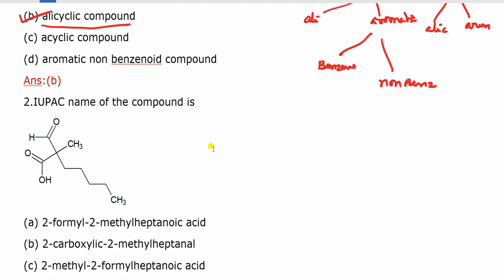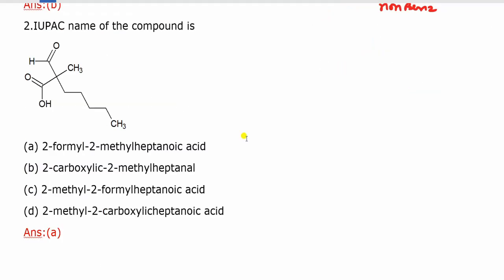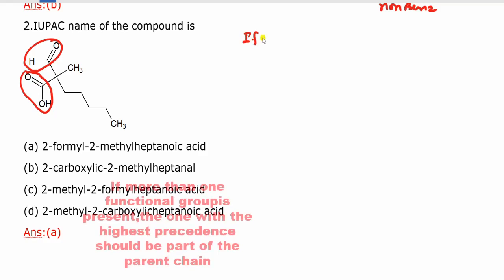Move to the next question. What is the name of this compound? When we analyze the compound, we have two functional groups. One functional group is acid. If more than one functional group is present, the highest precedence determines the name.